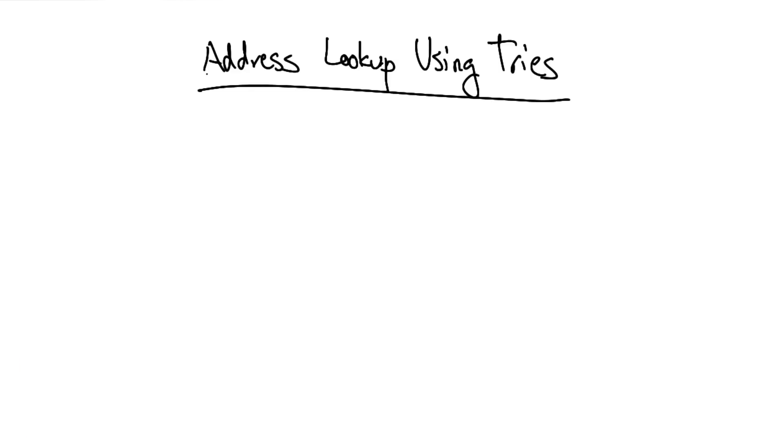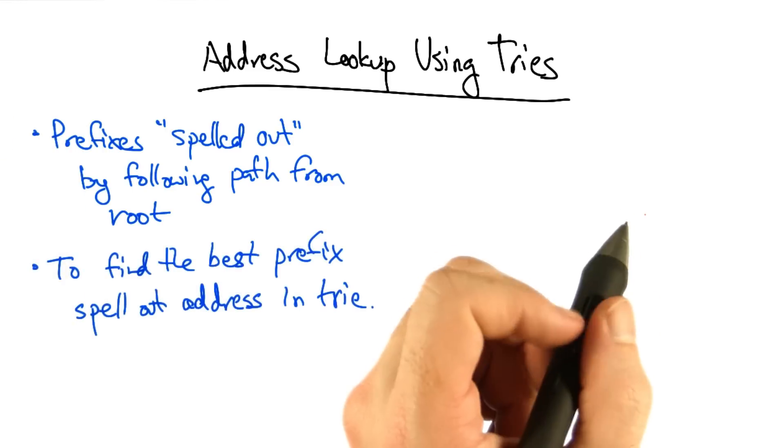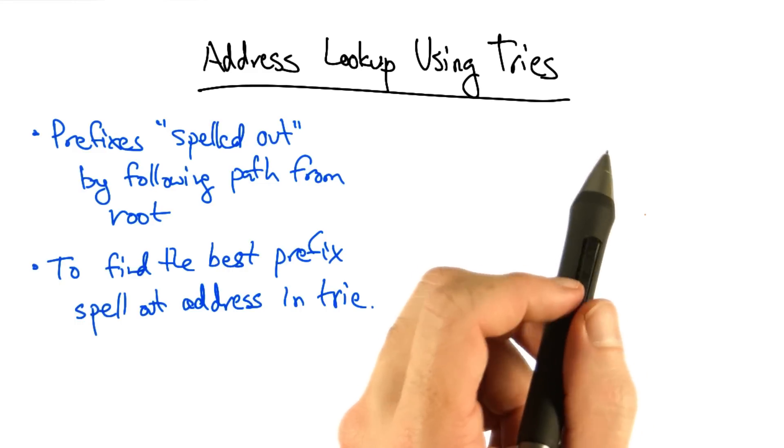An alternative is to perform address lookups using a data structure called a trie. In a trie, prefixes are spelled out by following a path from the root. And to find the best prefix, we simply spell out the address in the trie.